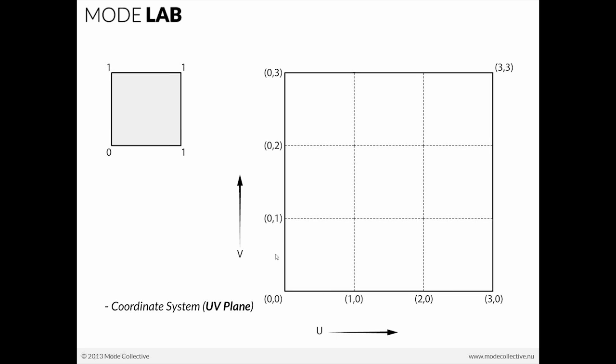As we move in the vertical direction, in the V direction, you can see 0, 1 — 0, 2 — 0, 3. So 0, 0; 1, 0; 0, 1. Let's try to figure out what this point is where my mouse is — go ahead and post that to the question box. Yeah, you're right — that would be 1, 1. So 0, 0; 1, 0; 0, 1; 1, 1.